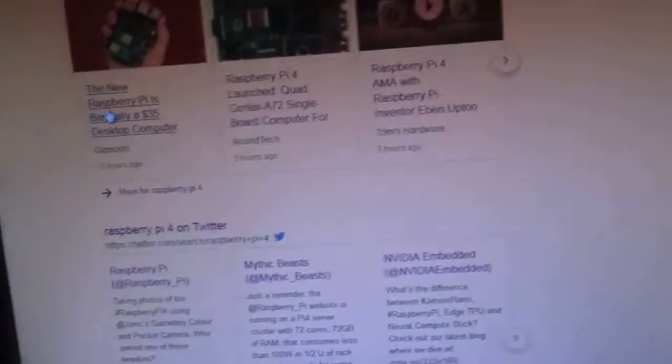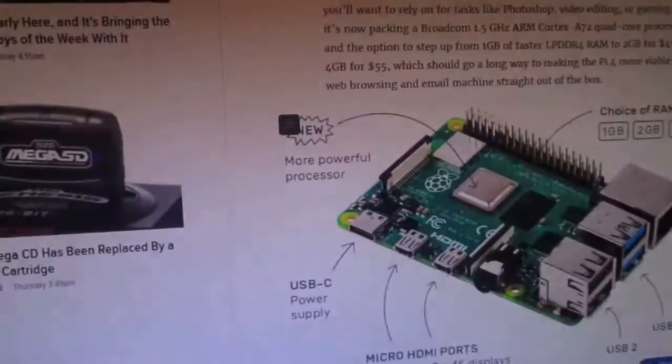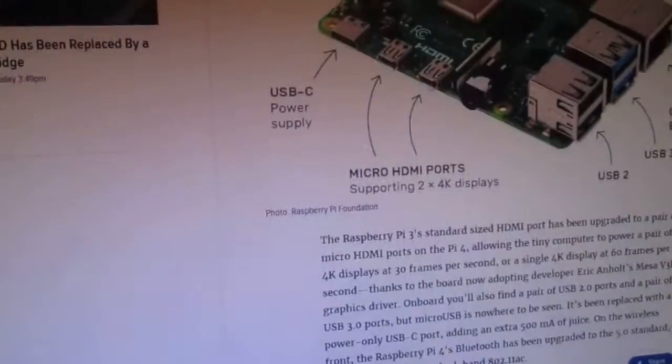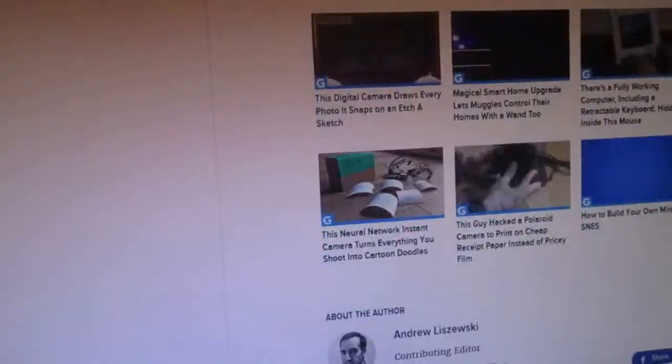Oh my god, search results. The new Raspberry Pi is basically a $35 desktop computer. Oh I gotta get one. $55 for four gigabytes. I might go and play around with it. I gotta get a case for it.